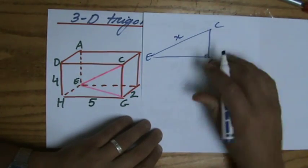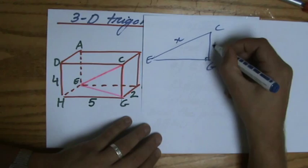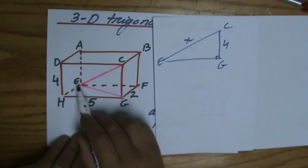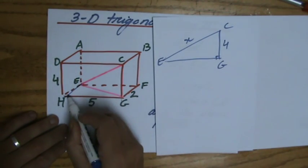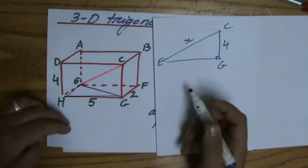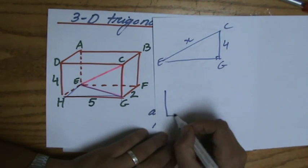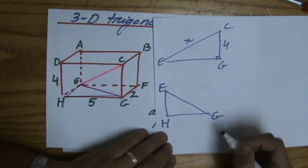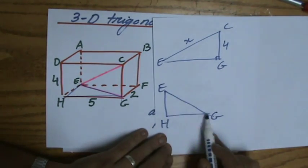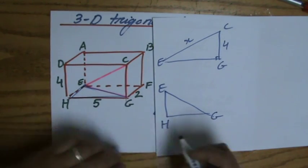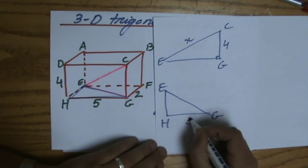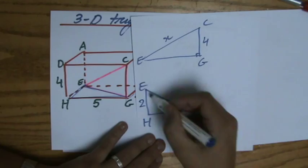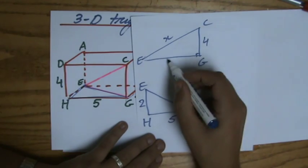We've got to find EC or CE, so I'm going to put an X there. The length of GC is 4 and I don't know EG yet, however I can calculate EG because this is also a right angle triangle. Let me draw that over here. That is H, E, G.